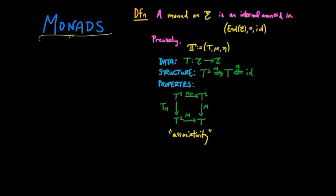The unit law just states that starting with T, we can apply the unit either on the left or on the right, and then take the multiplication, and that should give us back the identity endomorphism.